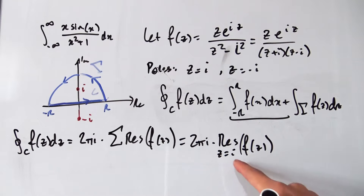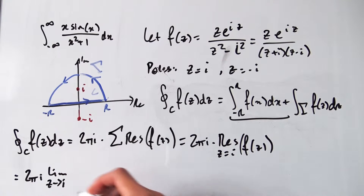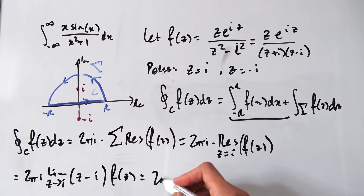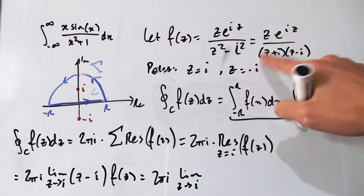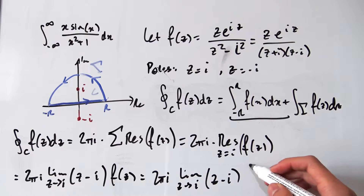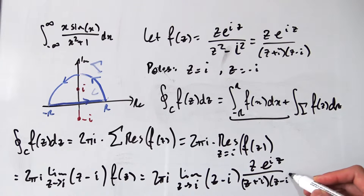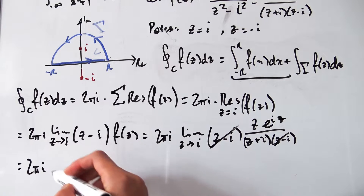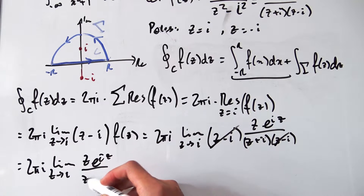Using the definition of the residue, we have 2πi times the limit as z approaches i of (z − i) · f(z). Substituting f(z) = z·e^(iz) / [(z + i)(z − i)], the (z − i) factors cancel, leaving 2πi times the limit as z approaches i of z·e^(iz) / (z + i).